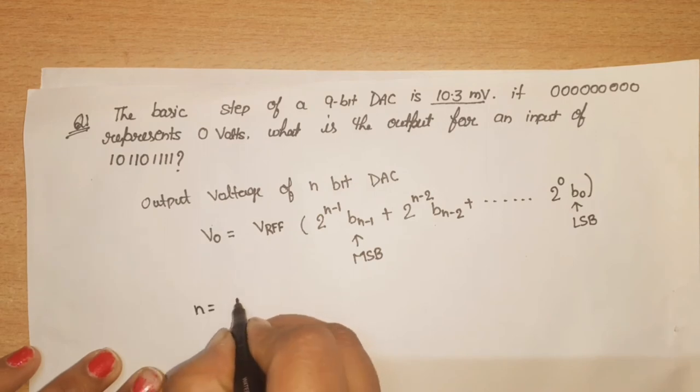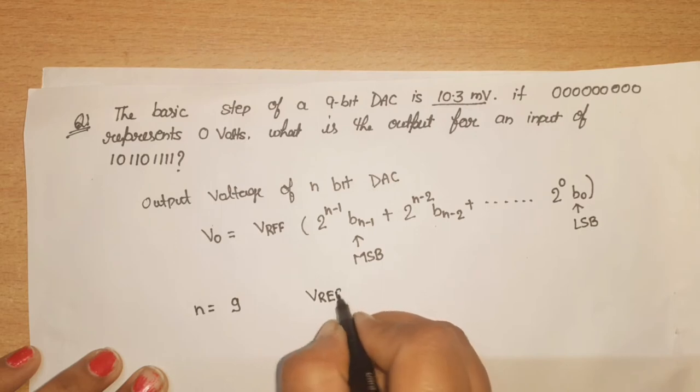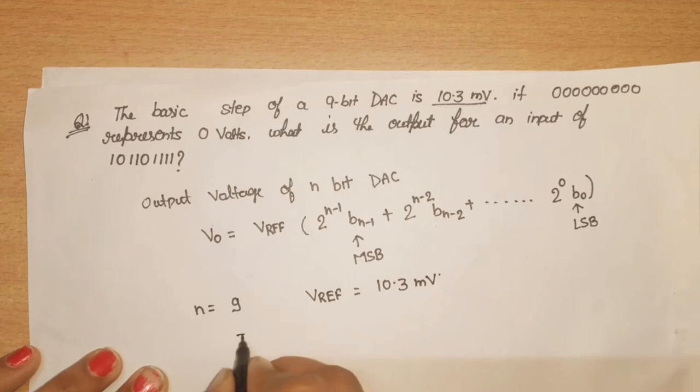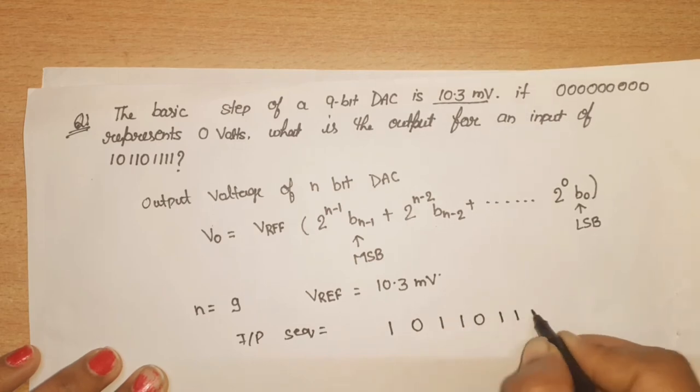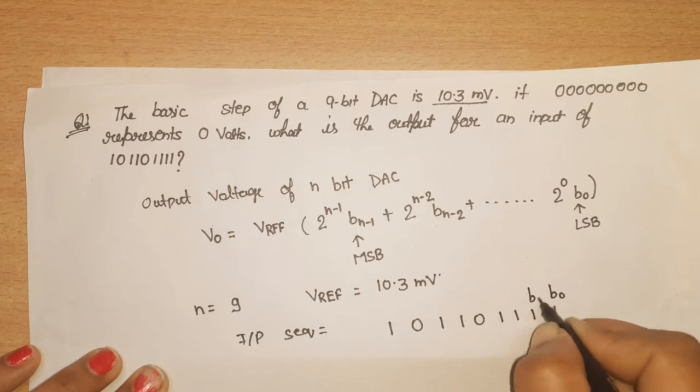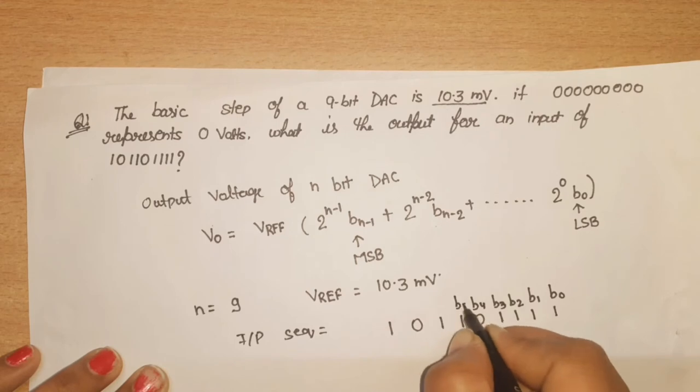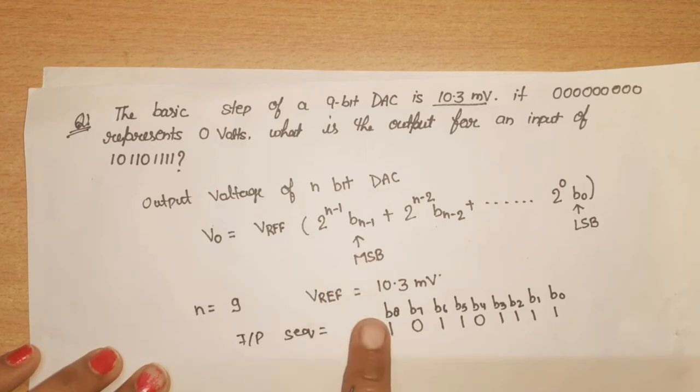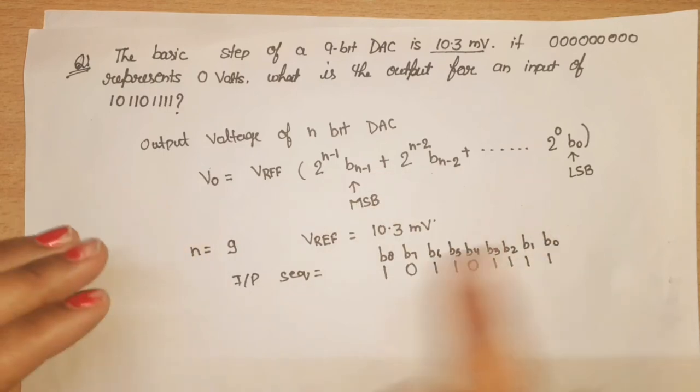n is equal to 9-bit and V reference is 10.3 millivolt. Input sequence which is 101101111. LSB is b0, b1, b2, b3, b4, b5, b6, b7, b8. n-1 means 8.